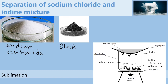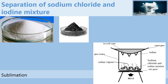You will notice that iodine will turn directly from solid into purple vapours. The purple vapours will get deposited at the bottom of the watch glass. In the end, you will notice that sodium chloride will remain at the bottom of the beaker, while the iodine will get deposited at the bottom of the watch glass. We could then take out the watch glass and scrub off the iodine, and we would have separated the two substances.